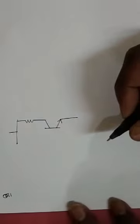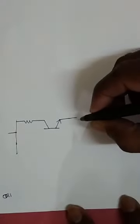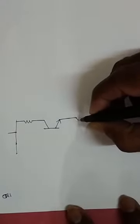इस तरह से voltage divider biasing की analysis करते हैं. पहले Thevenin equivalent circuit बनाते हैं, फिर input side evaluate करते हैं तो हमें current मिलता है, और output circuit की analysis करते हैं तो हमें voltage मिलते हैं. अब हम voltage divider biasing का एक और problem लेते हैं — यह common emitter configuration का circuit है जिसमें voltage divider biasing यूज हुआ है.